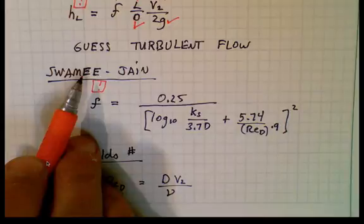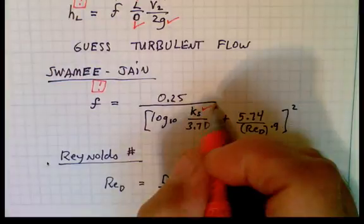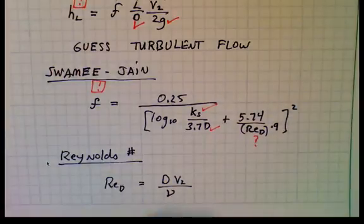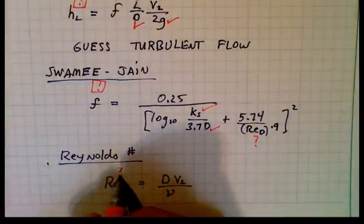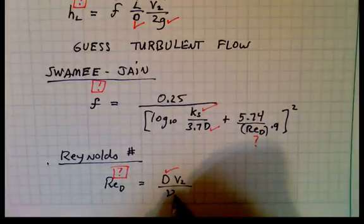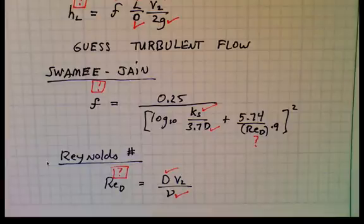I've written the Swami-Jain correlation. The sand roughness height I know for the pipe. Pipe diameter is known. And I need the Reynolds number. So Reynolds number is my new goal. And I know the pipe diameter. I can look up the kinematic viscosity of water, and I'll look that up and document it.